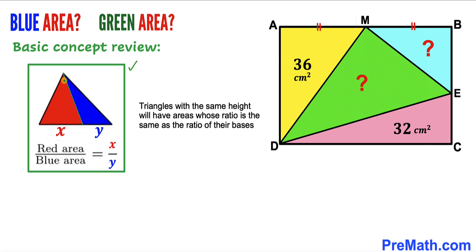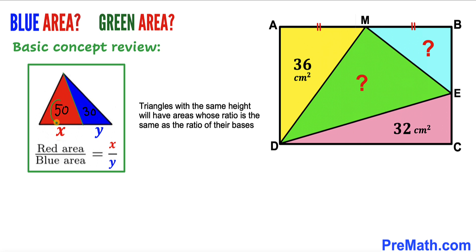Here's our next concept. Focusing on two triangles — red and blue — both having the same height, but the red triangle has base x while the blue triangle has base y. Therefore, triangles with the same height have areas whose ratio equals the ratio of their bases. For example, if the red triangle area is 50 and the blue is 30, their bases ratio is 5 to 3.